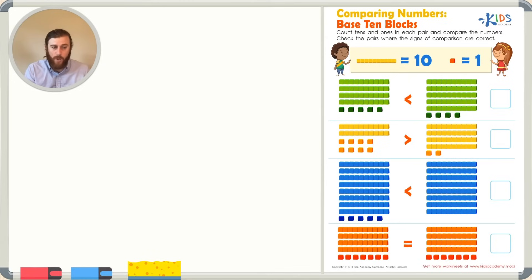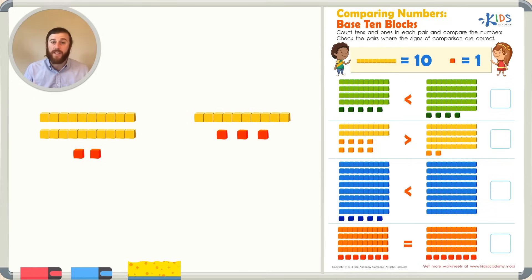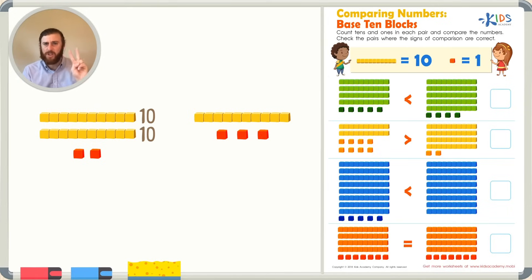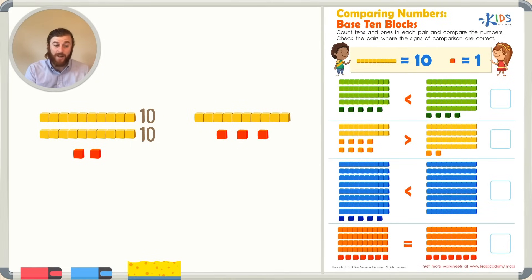Let's say, for example, we had a number with 2 longs and 2 cubes. We wanted to compare this to a number with 1 long and 3 cubes. What do these blocks really represent? One way we can see what this number is quickly is by simply counting the base 10 blocks, starting with the longs. We have one long representing 10 and another long representing 10, so we can count by 10 two times: 10, 20. Now we know we have 20, and we can count on with our two cubes: 20, 21, 22. So these base 10 blocks represent the number 22.